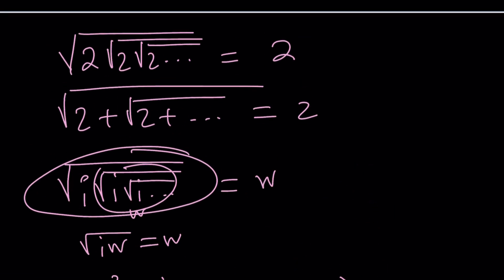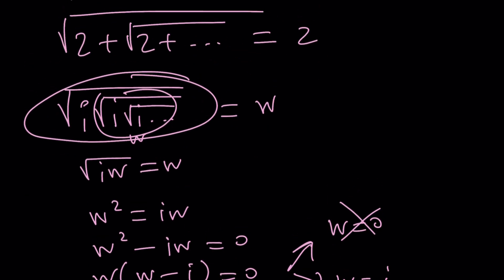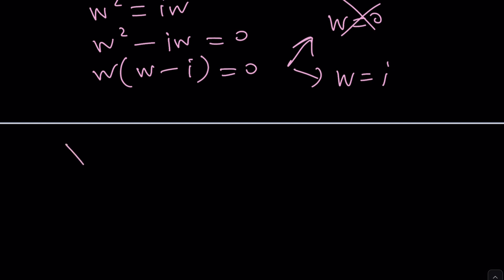And w equals i. So just like the 2 in the example, i gives us the same thing. It kind of makes sense, doesn't it? But how do you prove that it's convergent? That's a different story. And with the sum, can we find something nice?